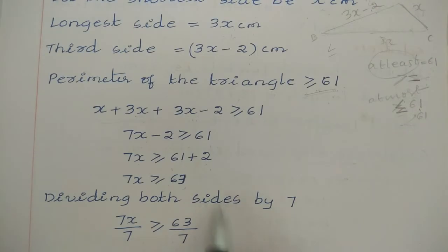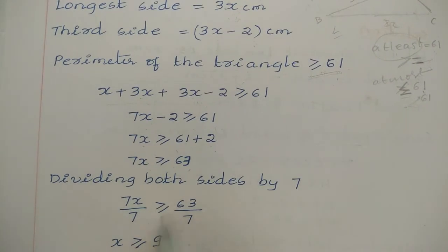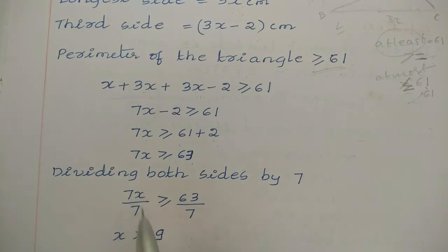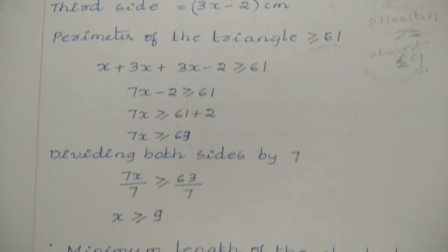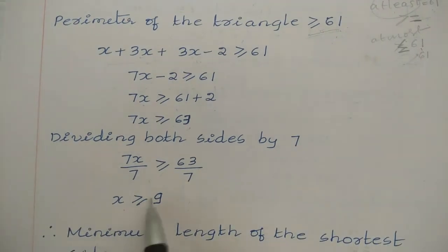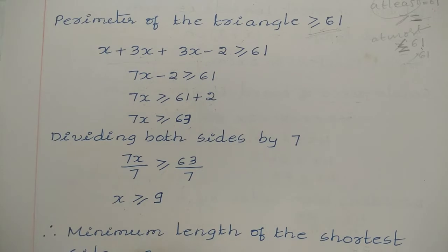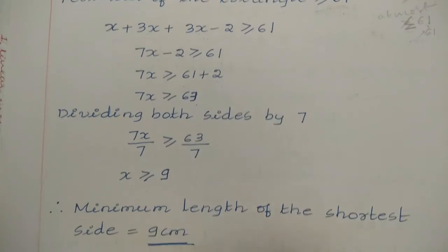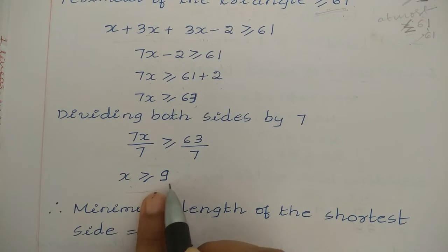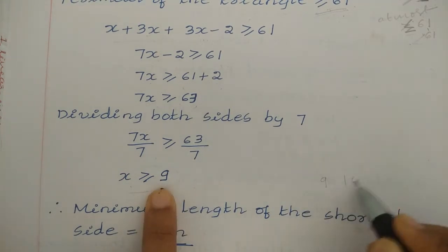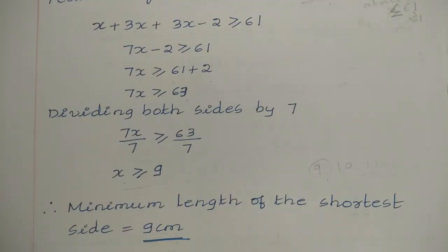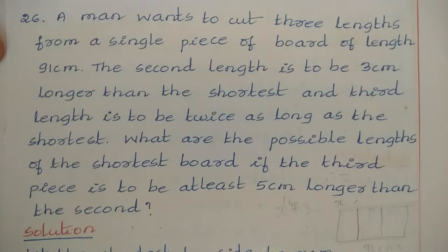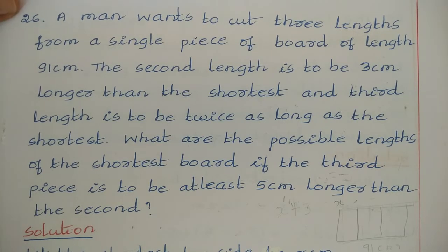Dividing both sides by 7: x ≥ 63 ÷ 7, so x ≥ 9. We need to find the minimum length of the shortest side. We got x ≥ 9, meaning the minimum value is 9 — it can be 10, 11, 12, etc. Since x represents the shortest side, the minimum length of the shortest side is 9 centimeters.